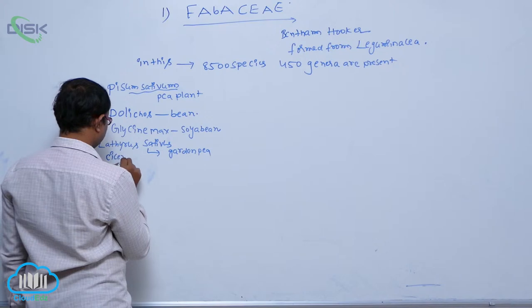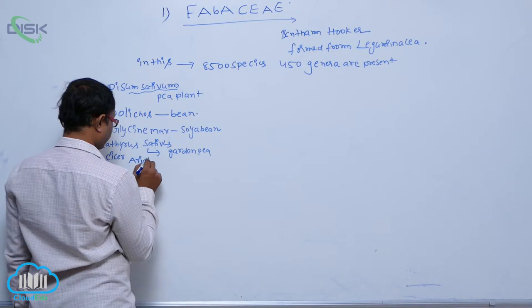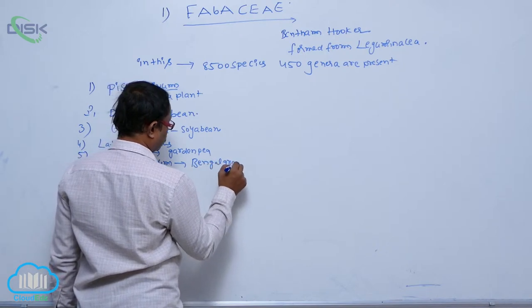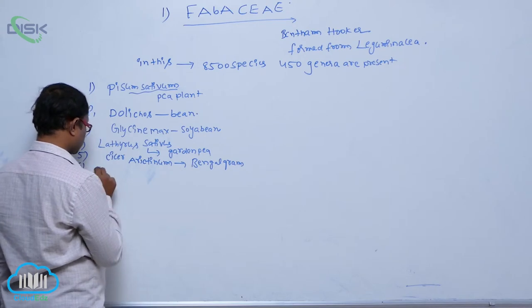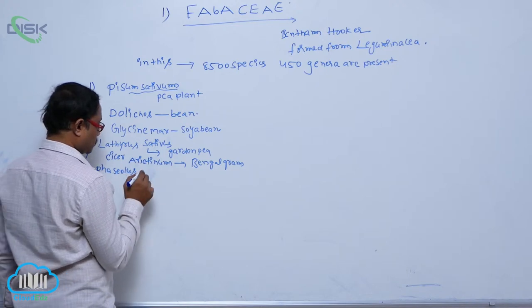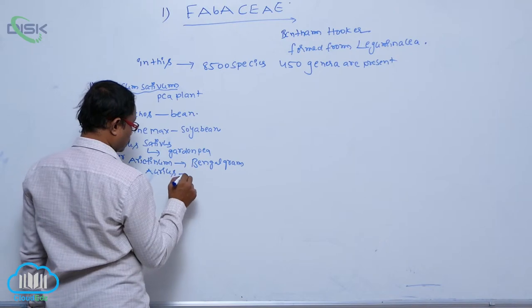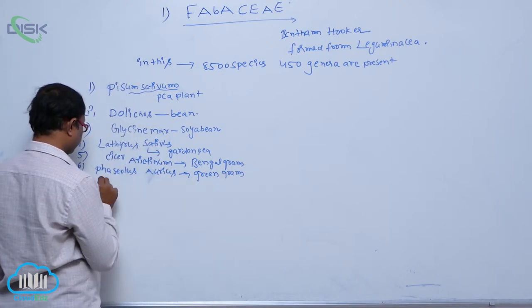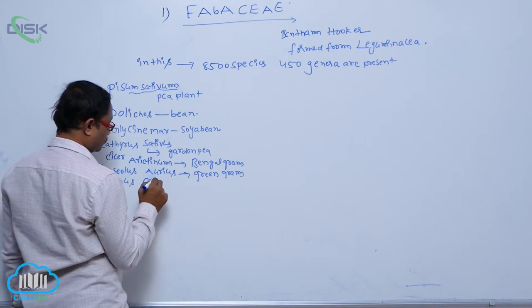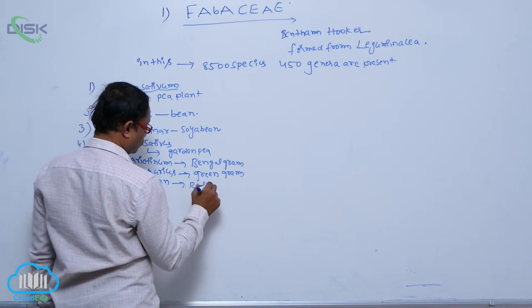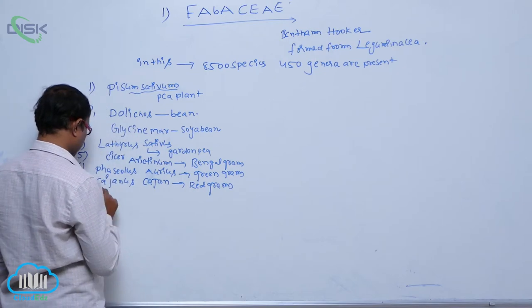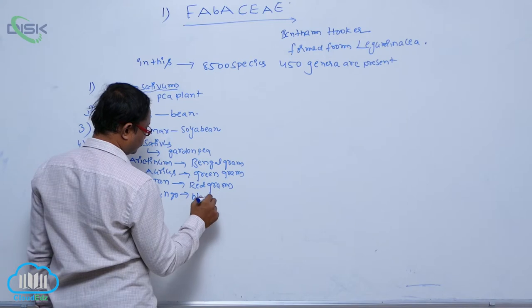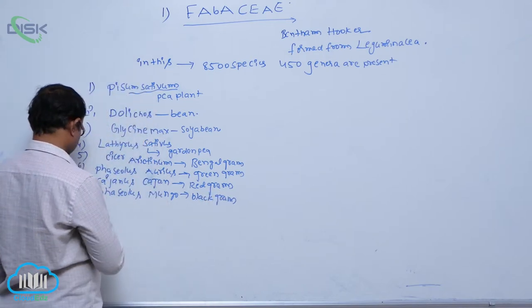Cicer arietinum, Bengal gram. Phaseolus aureus, green gram. Cajanus cajan, red gram. Phaseolus mungo, black gram. Trigonella.